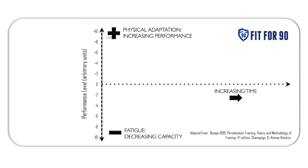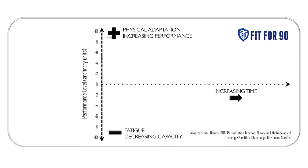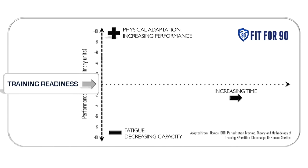The horizontal axis represents time. Each time we walk on the field, we have a group of players that are entering with a certain degree of readiness — their training readiness, so to speak. As a coach, we have to address where the players are at a specific point in time and match that readiness with our training stress.